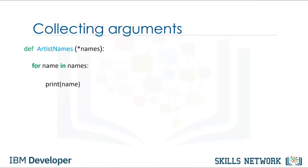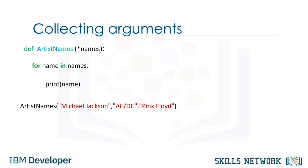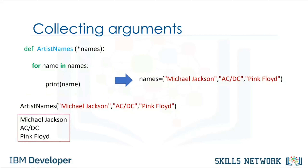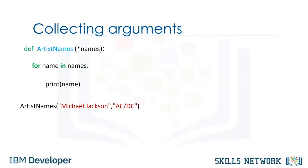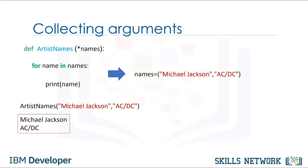Variadic parameters allow us to input a variable number of elements. The function has an asterisk on the parameter names. When we call the function with three parameters, they are packed into the tuple names, and we iterate through the loop printing the values. If we call the same function with only two parameters, the variable names contains only two elements and only two values are printed out.